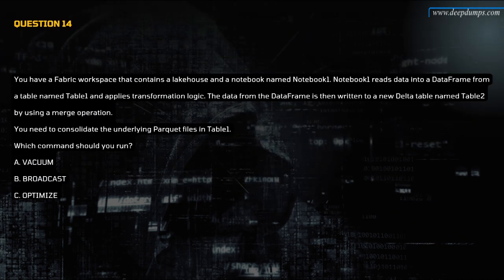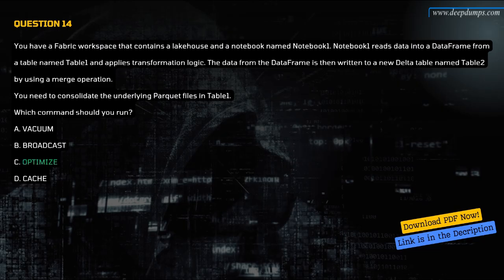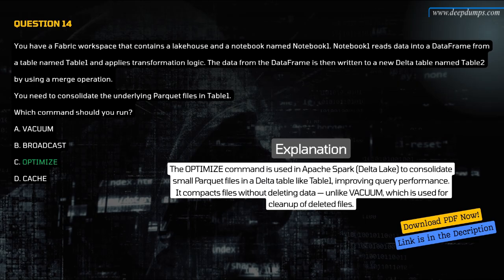Question 14. You have a Fabric workspace that contains a lake house and a notebook named Notebook-1. Notebook-1 reads data into a data frame from a table named Table-1 and applies transformation logic. The data is then written to a new delta table named Table-2 using a merge operation. You need to consolidate the underlying parquet files in Table-1. Which command should you run? A. Vacuum. B. Broadcast. C. Optimize. D. Cache. The correct answer is C. Optimize. The OPTIMIZE command in Apache Spark Delta Lake consolidates small parquet files in a delta table like Table-1, improving query performance. It compacts files without deleting data, unlike VACUUM which is used for cleanup of deleted files.